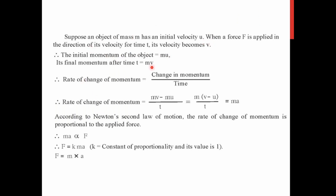The mathematical derivation in the textbook explains the change in momentum. Suppose an object has mass m and initial velocity u. When a force F is applied, its velocity changes to v. Initial momentum is p = mu and final momentum is p = mv. The rate of change of momentum is the change in momentum divided by time — that is, final momentum minus initial momentum divided by time.